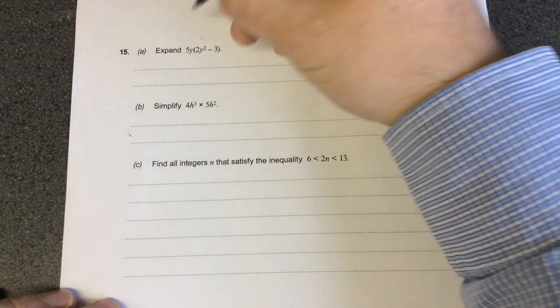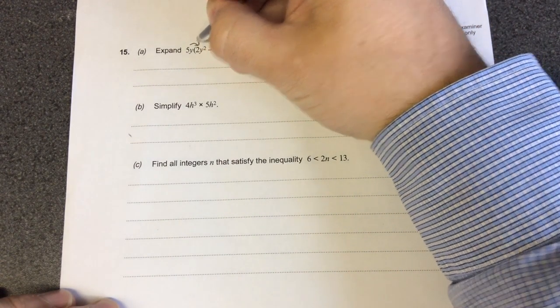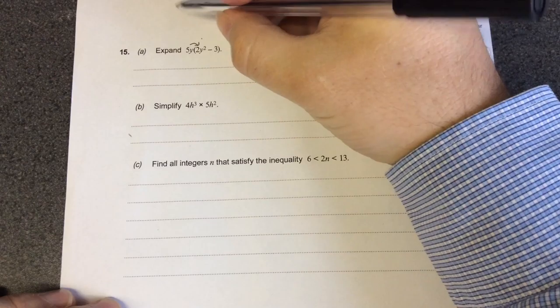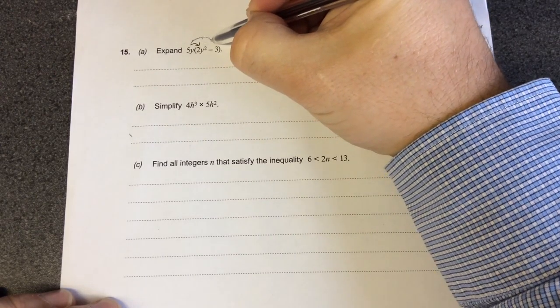When we expand the bracket we multiply it out. So we were doing 5y times 2y squared and then 5y multiplied by minus 3.